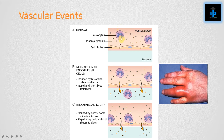First, let's see the vascular events. In normal conditions, leukocytes and plasma proteins are seen inside the artery. This is the lumen of the vessel, this is the tissue, and these are the endothelial cells. In normal conditions the leukocytes and plasma proteins are seen within the artery.